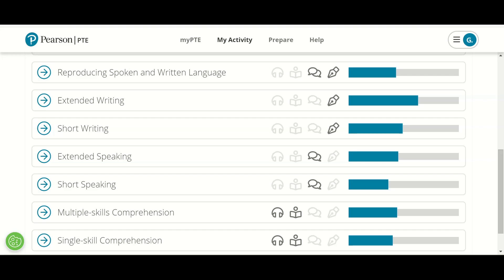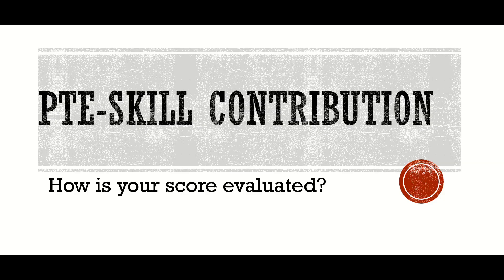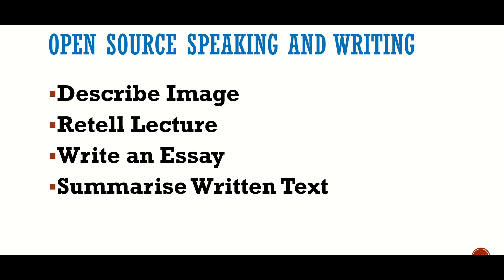According to my understanding, I have mentioned which modules contribute to which skill profile. The first skill profile is open source speaking and writing. The modules contributing to it are: describe image, re-tell lecture, write essay, and summarize written text. These four modules are important for the open source speaking and writing section.